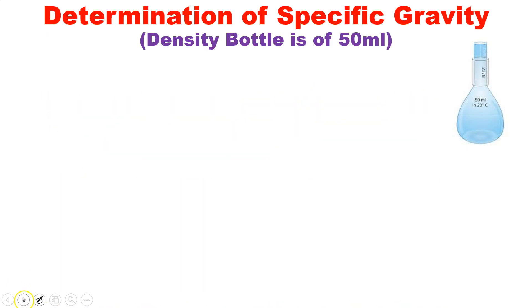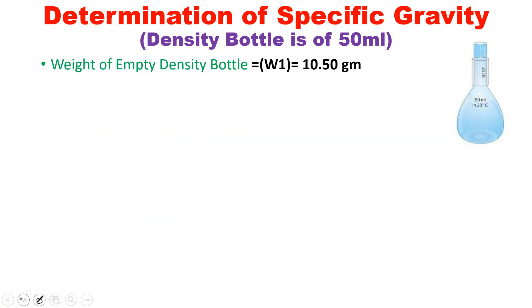Now let's see how to calculate specific gravity and density of any given liquid using a density bottle. I have taken a 50 mL density bottle. There is no need to measure 50 mL separately — just fill the bottle with the sample and it gives you exactly 50 mL. Before filling it, you need to weigh the empty bottle.